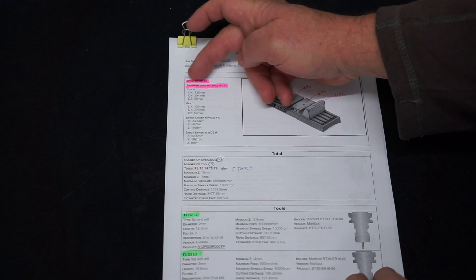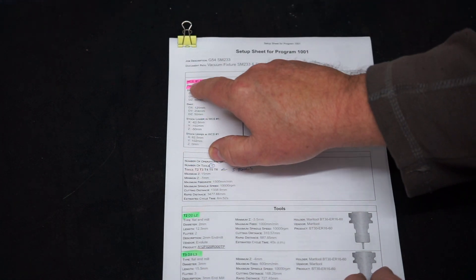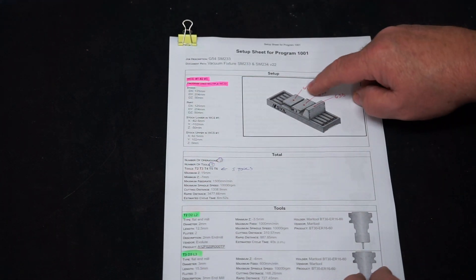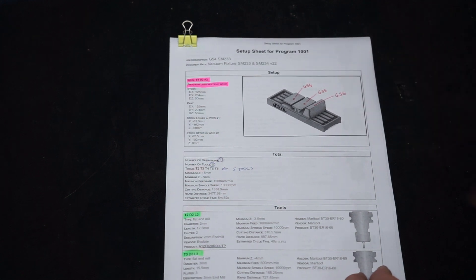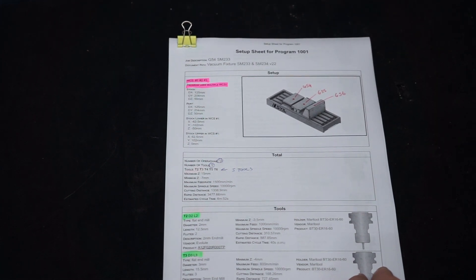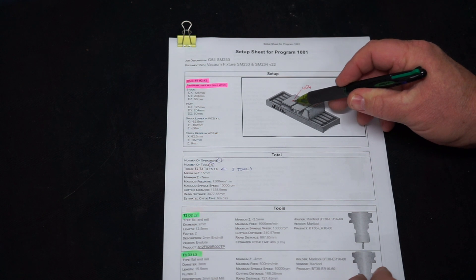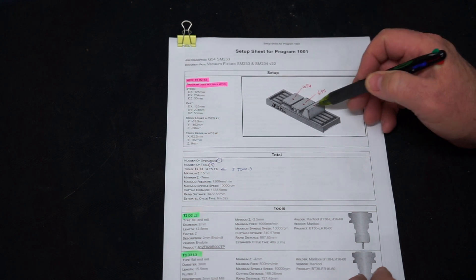So straight away, I know that I've got three work coordinate systems here, so G54, G55, G56. I made a little note on here that the work coordinate is actually on the top of the face in the centre of each part.